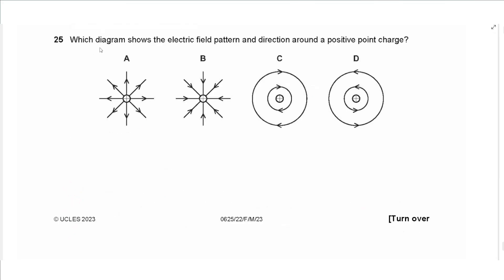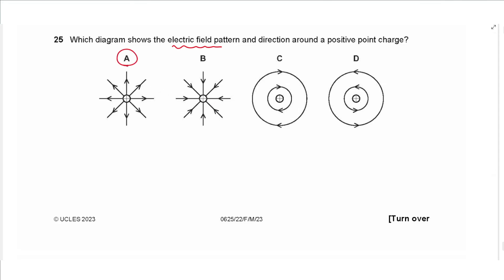Question 25: a positive point charge has an electric field pointing radially outwards in all directions. The answer is A.